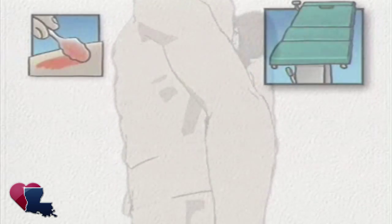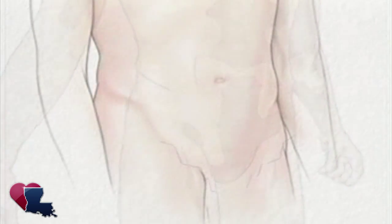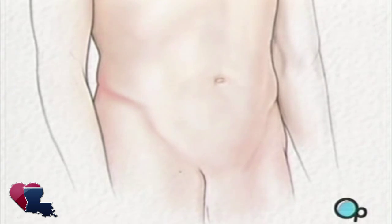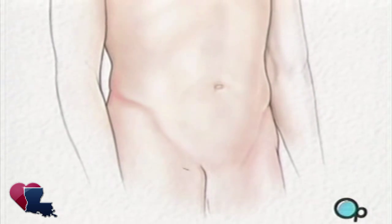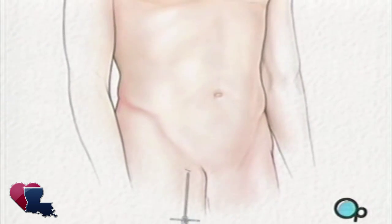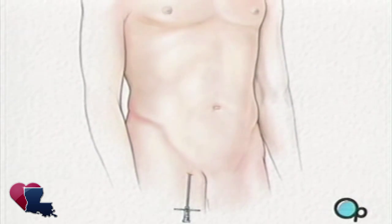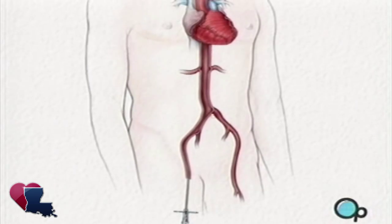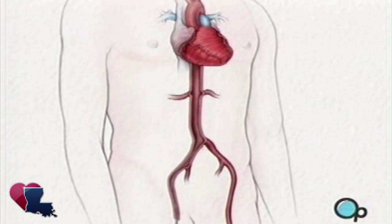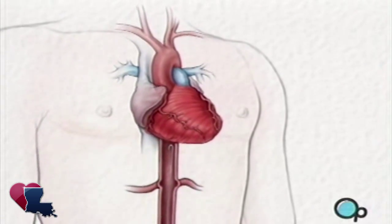To begin, your leg and groin are swabbed with an antiseptic solution. Then the doctor will make a small cut over the femoral artery in the upper part of the leg. A special needle is then inserted into the artery itself. Then a guide wire is carefully passed through the needle and gently pushed into the artery and upwards towards your chest.